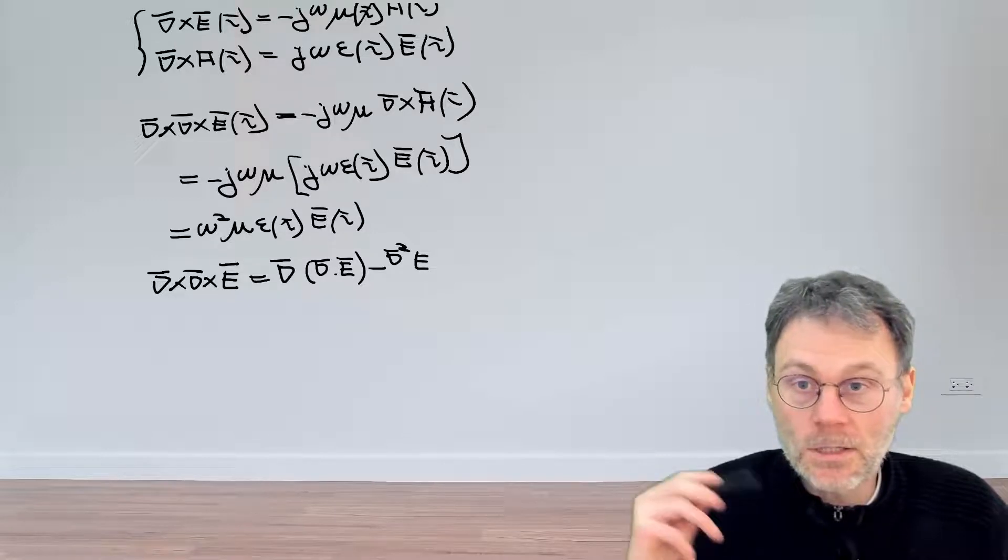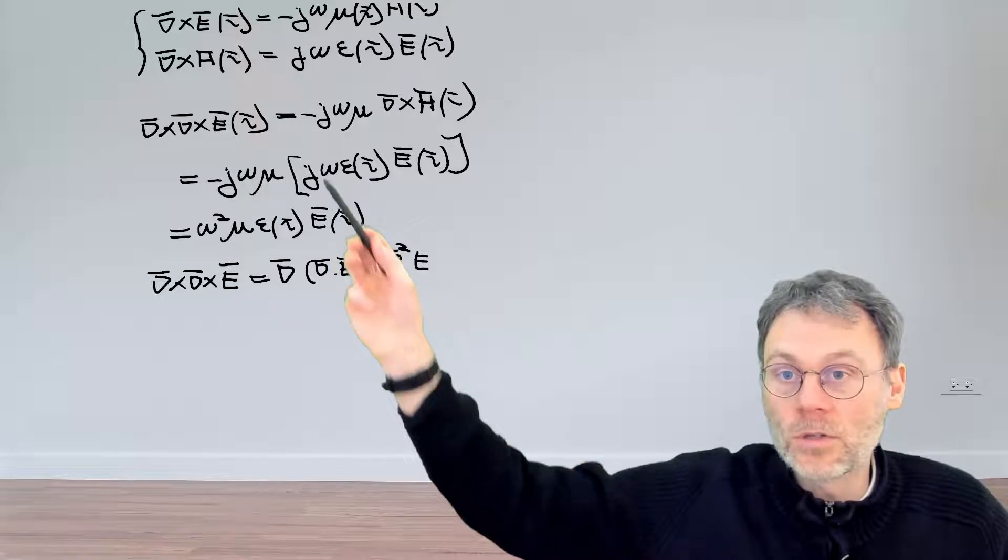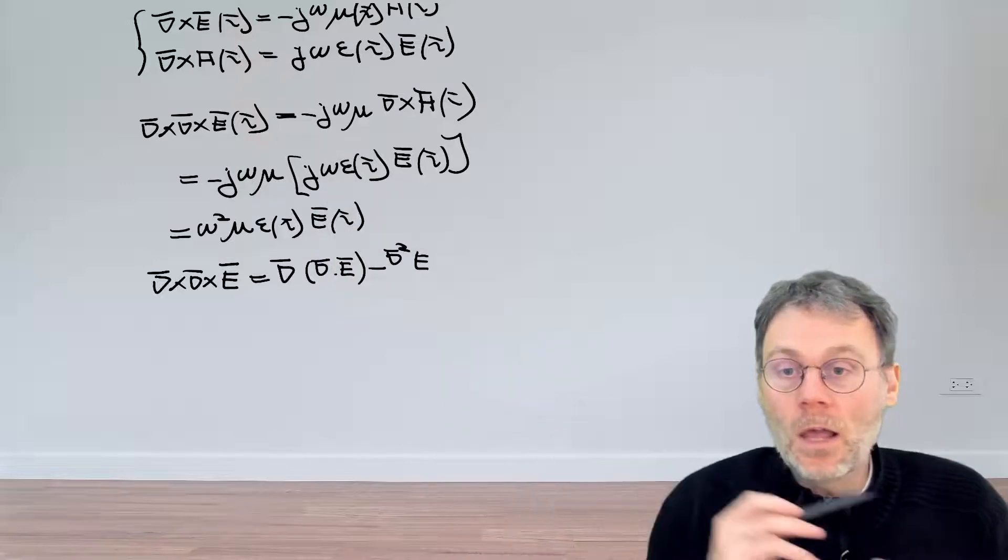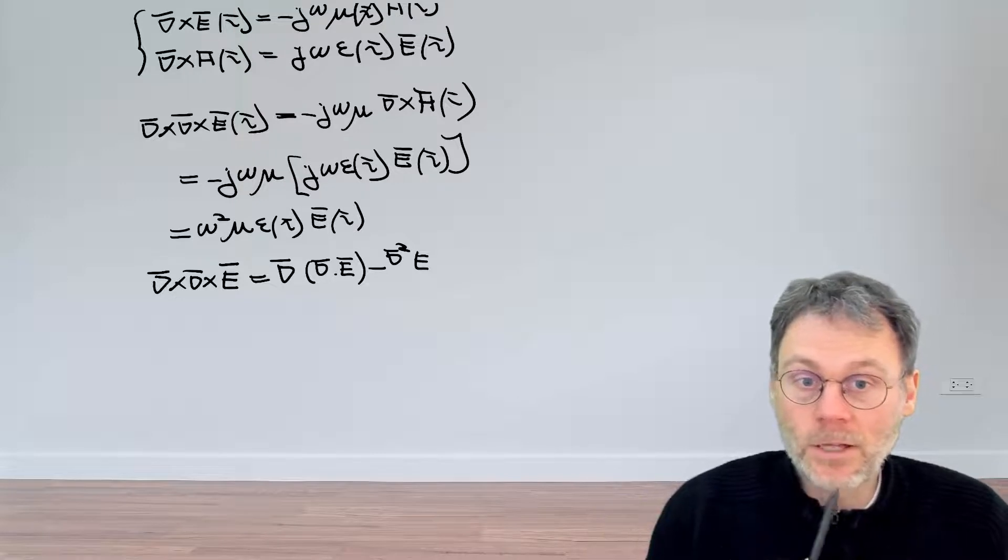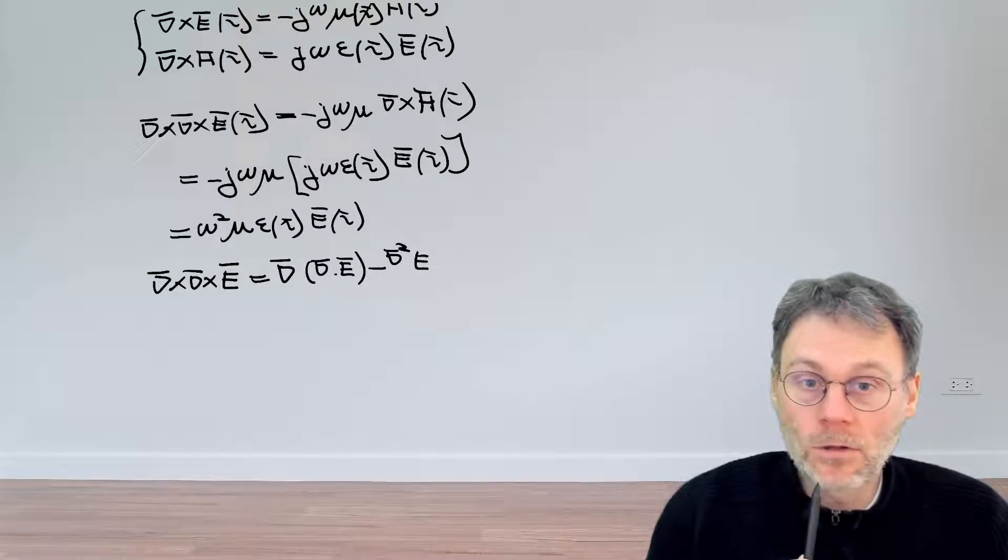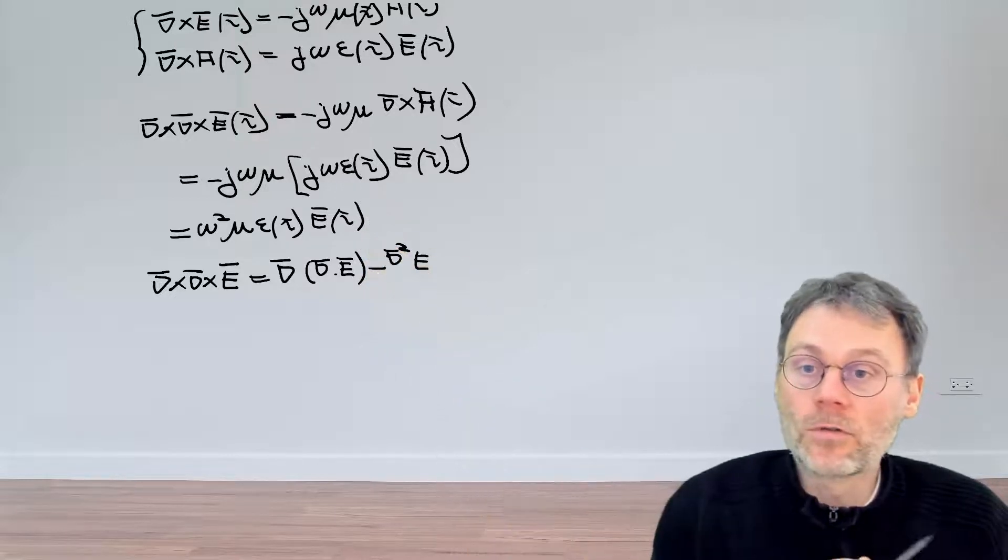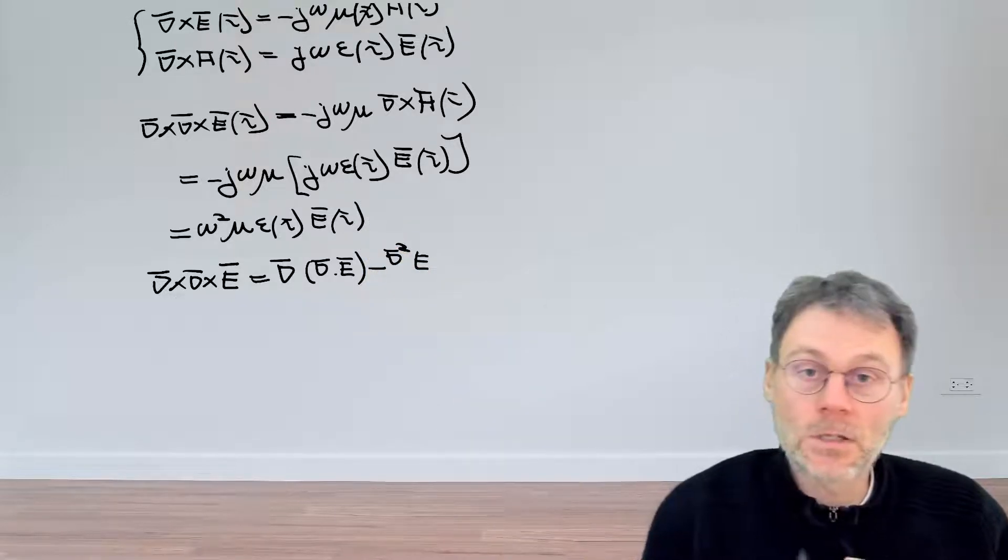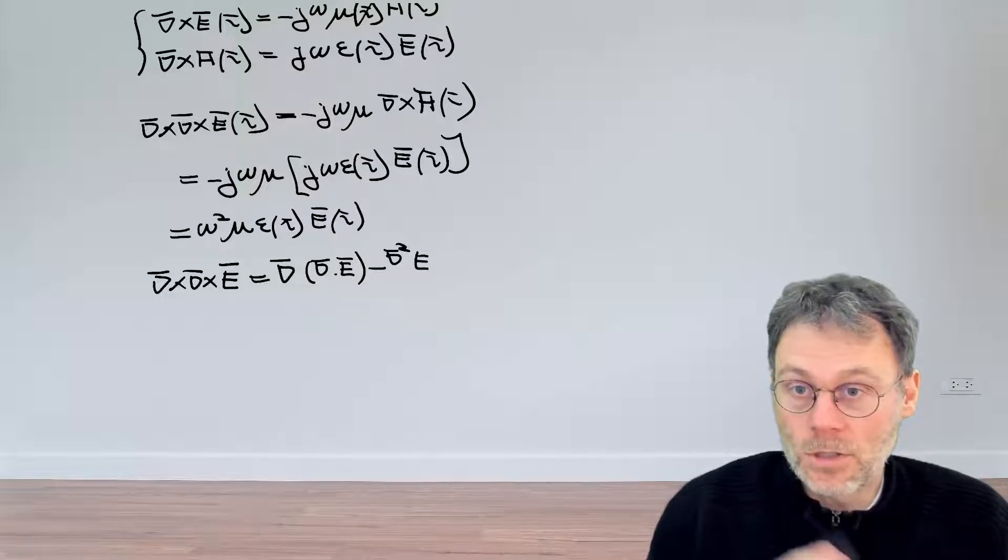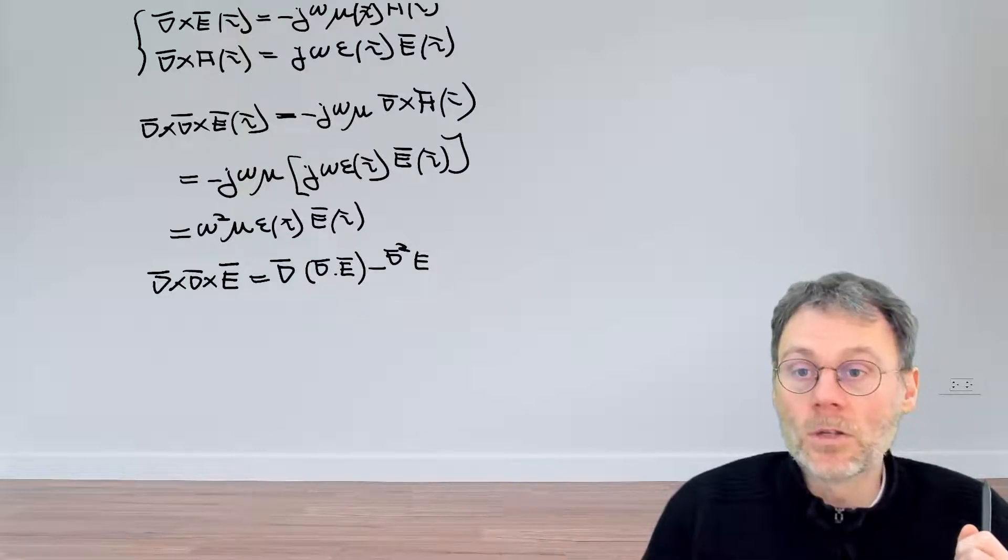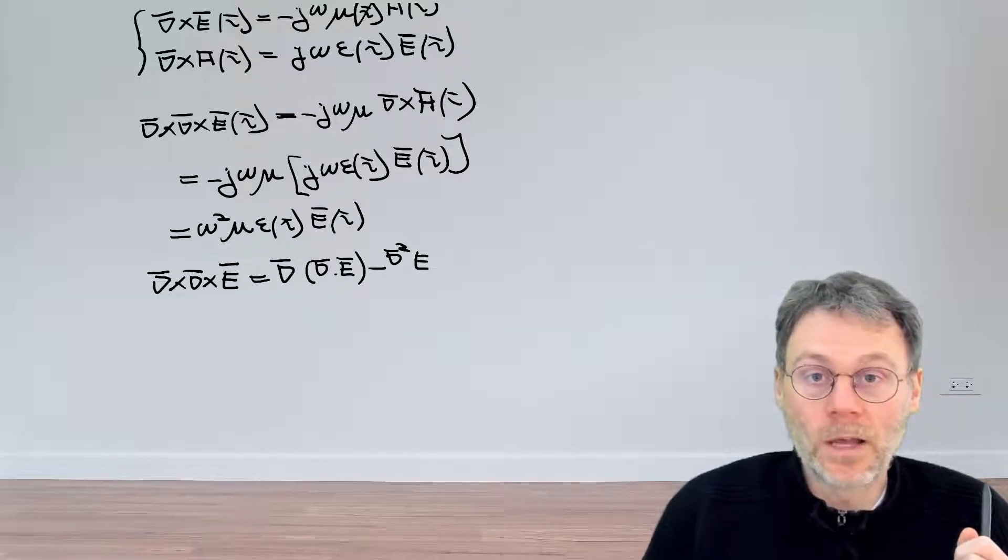So the question is, can you now try and make use of this equation to simplify that equation? Also making use of some more physics, some more of Maxwell's equations. And again, you're free to assume here that epsilon will be uniform, and you're also free to assume that there's no sources in our problem, so that any charge density rho is just equal to zero. So pause the video and see if based on these assumptions, you can further simplify the equation.